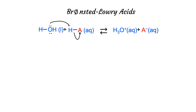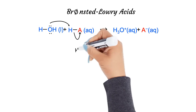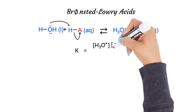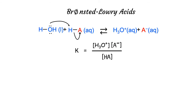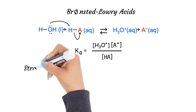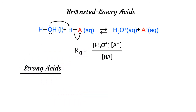Now let's consider the reaction of acids with water. The reaction of the hypothetical acid HA with water establishes an equilibrium where the equilibrium constant K equals the concentration of hydronium ions times the concentration of A⁻ over the concentration of the acid. Because we are dealing with acid dissociation or ionization, we call this Ka. The extent of reaction between the acid and water is given by the strength of the acid. For a strong acid, the reaction is very much product-favored — a strong acid completely dissociates, so the concentration of products (hydronium ions and A⁻) is much larger than the concentration of unreacted acid.